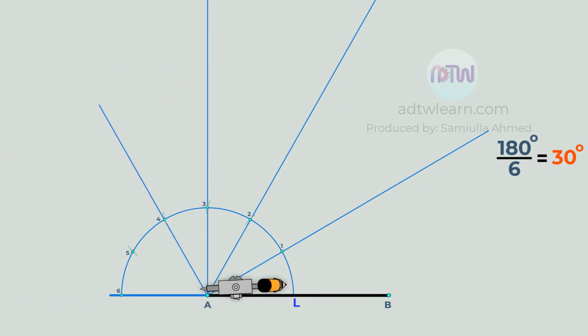Next, using a compass and adjusting it to length AB, and using point A as a center, cut an arc on the incline line passing through point four. Next, using point B as a center, cut an arc on a line passing through point one.